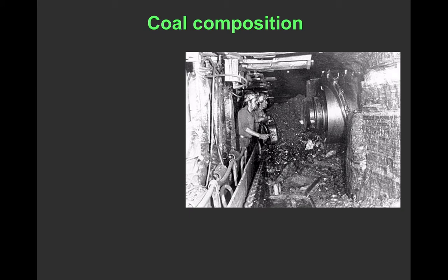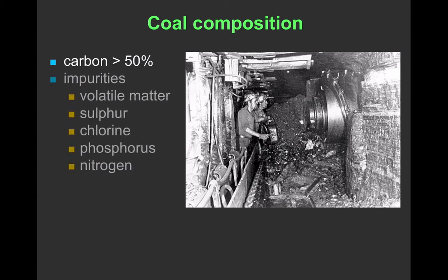If we look at the composition of coal, the key thing is that the carbon content must be over 50%. So an organic shale, for example, wouldn't fall under the definition of coal. If we only have a little more than 50% carbon, there clearly must be other materials in as well. We have various impurities, volatile matter like water, and a collection of other elements like sulfur and chlorine, which can of course cause environmental problems when burned.